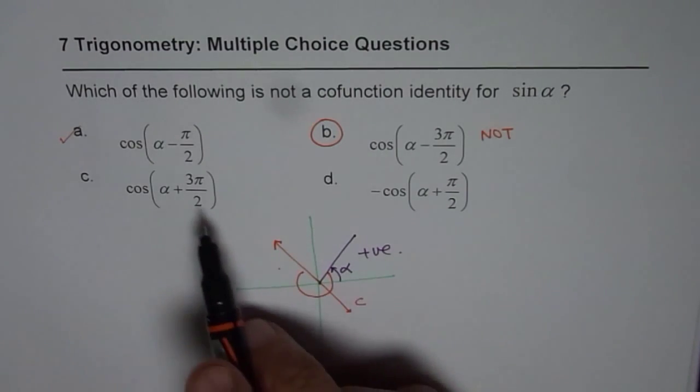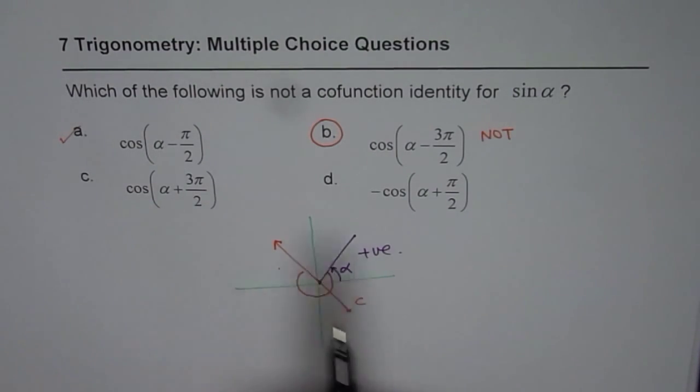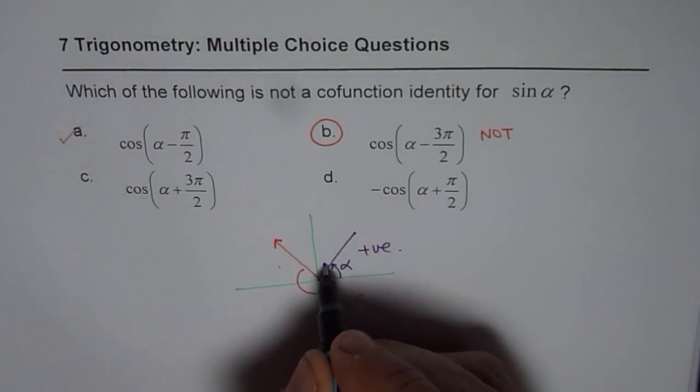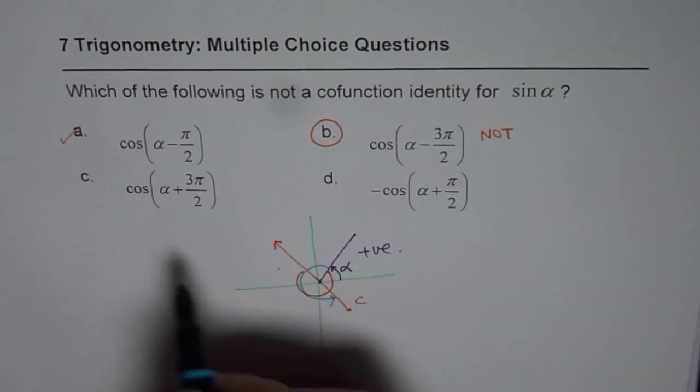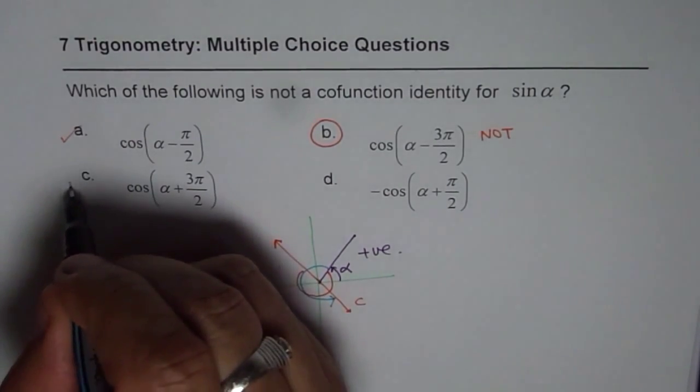Now, the other one here is cos(α + 3π/2). If I say cos(α + 3π/2), then we are moving from here, and we come back to quadrant 4, where this is positive. So, that is correct.